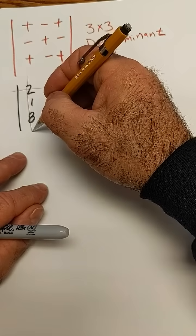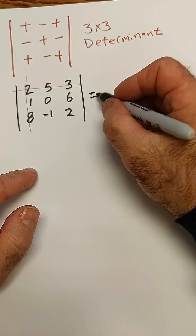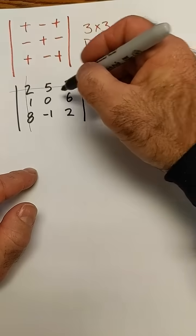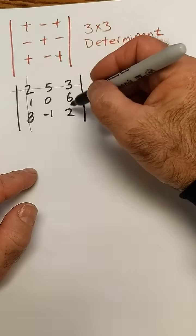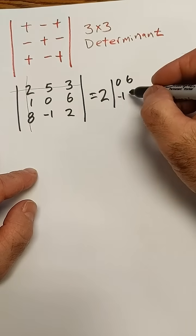I'm going to cross out its row and column. It is going to be a positive, so this is going to be equal to a positive 2. The four numbers that aren't crossed out give me a 2x2, so it's going to be 0, 6, negative 1, 2.